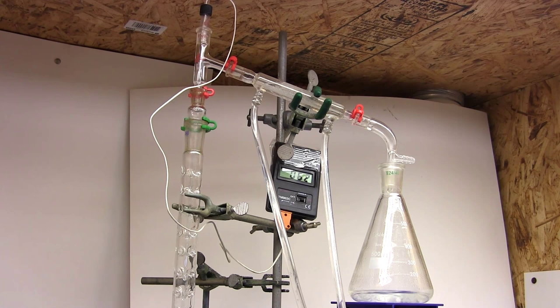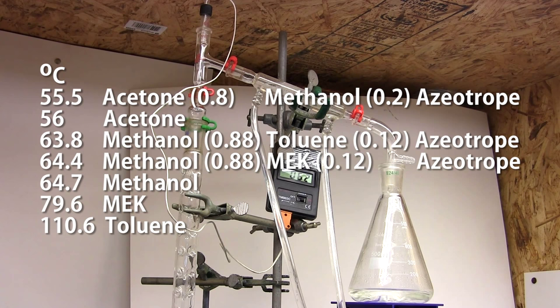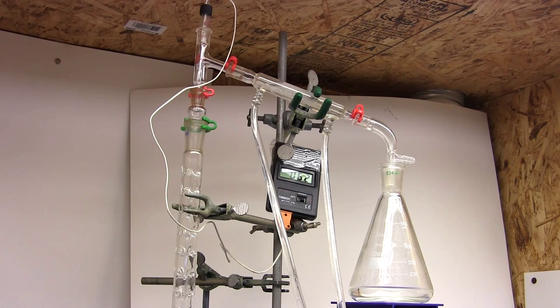Looks like we're getting a nice fraction of methanol azeotropes. Unfortunately since the boiling points are so close together, I'll be unable to tell when one fraction is finished and the other begins due to the poor resolution of my thermometer. Another issue is that my fractionation column might not be good enough to resolve a 0.6 degree difference in compounds.